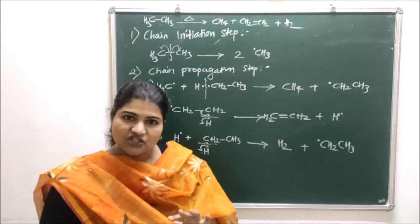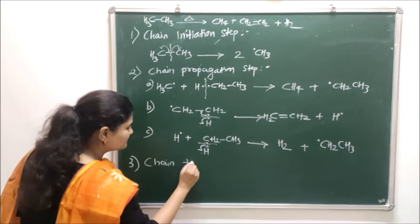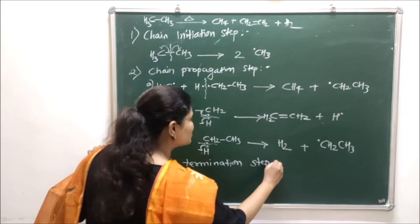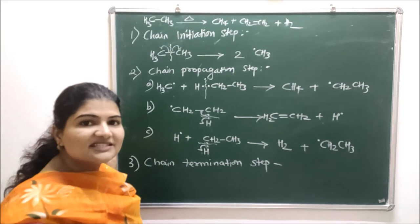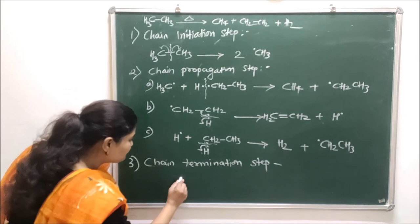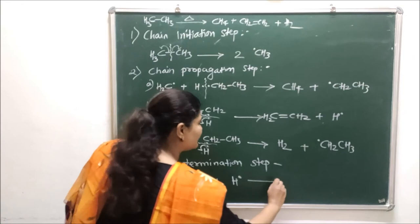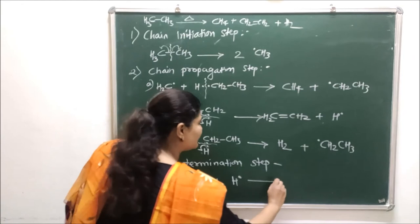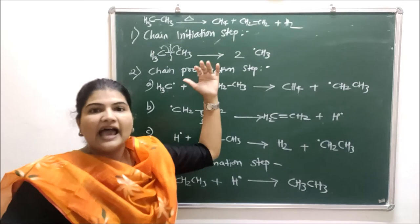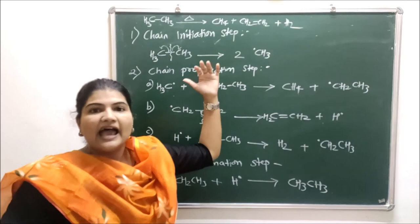In the chain termination step, the reaction is terminated when free radicals neutralize themselves. The ethyl free radical (·CH₂CH₃) reacts with a hydrogen free radical (H·) to form ethane (CH₃CH₃), which is our original substrate. This substrate can then go back to step one, and the reaction continues.